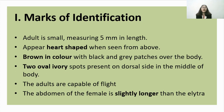The first point is marks of identification. The external characters by which we identify a particular organism or insect are called its marks of identification. Adults are small in size, measuring 5 mm in length. They appear heart-shaped when seen from above. The body is brown in color with black and gray patches. There is presence of two oval ivory spots on the dorsal side in the middle of the body.